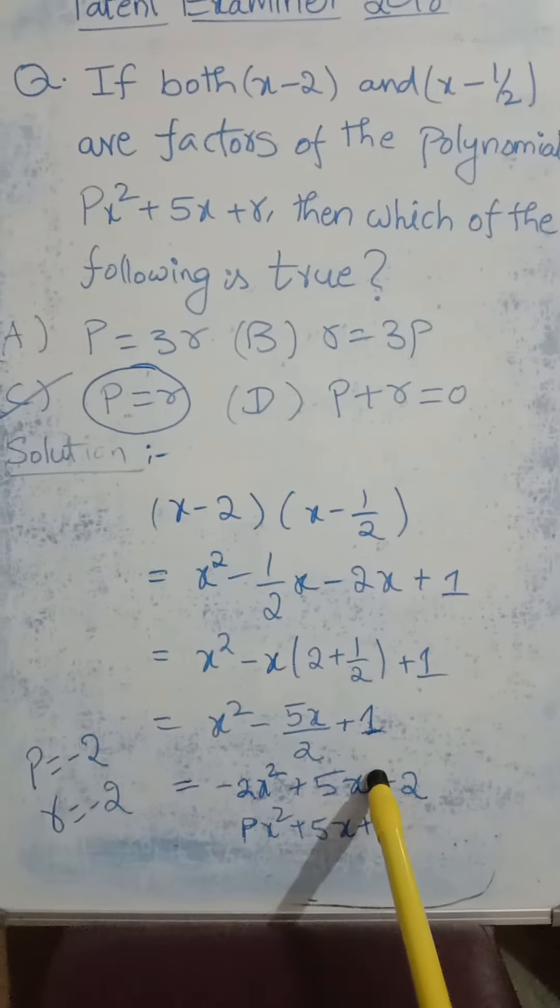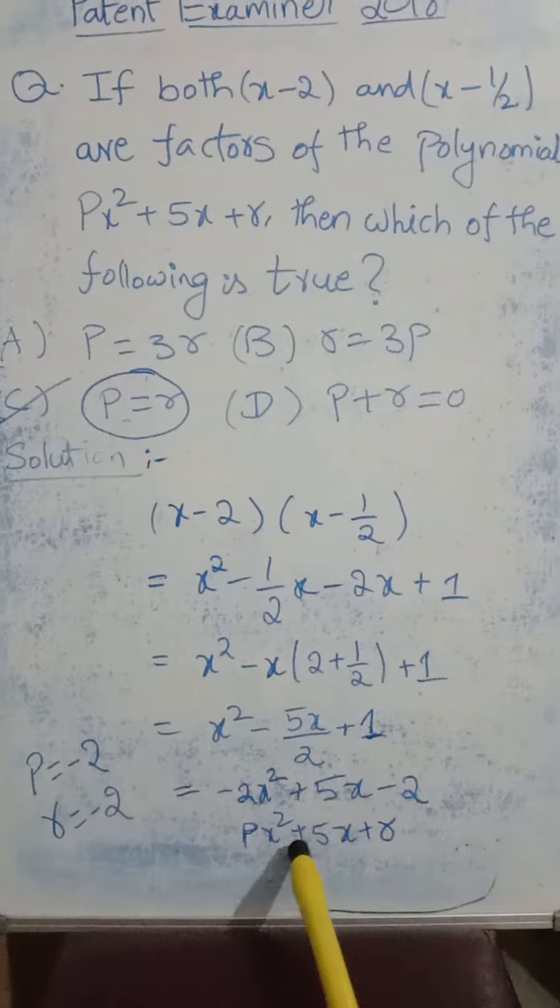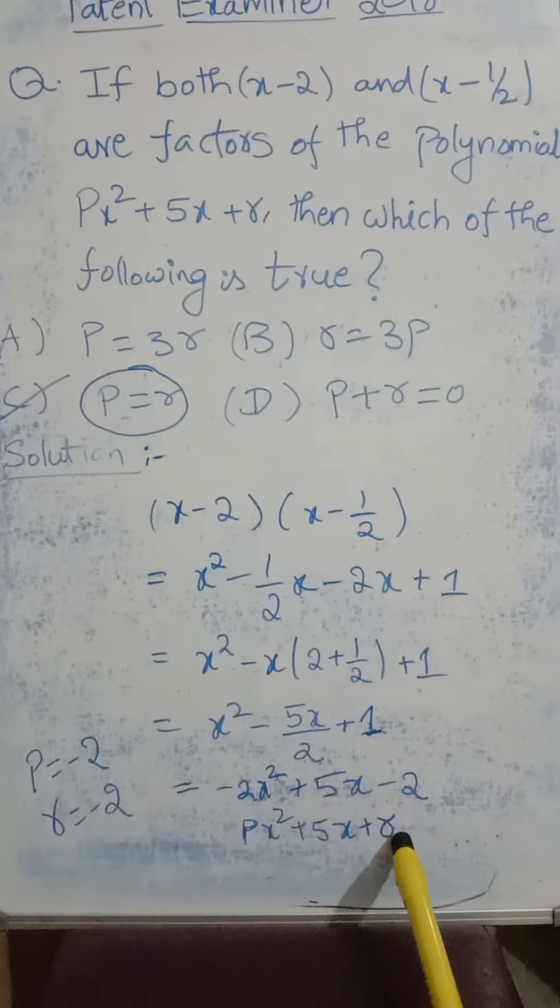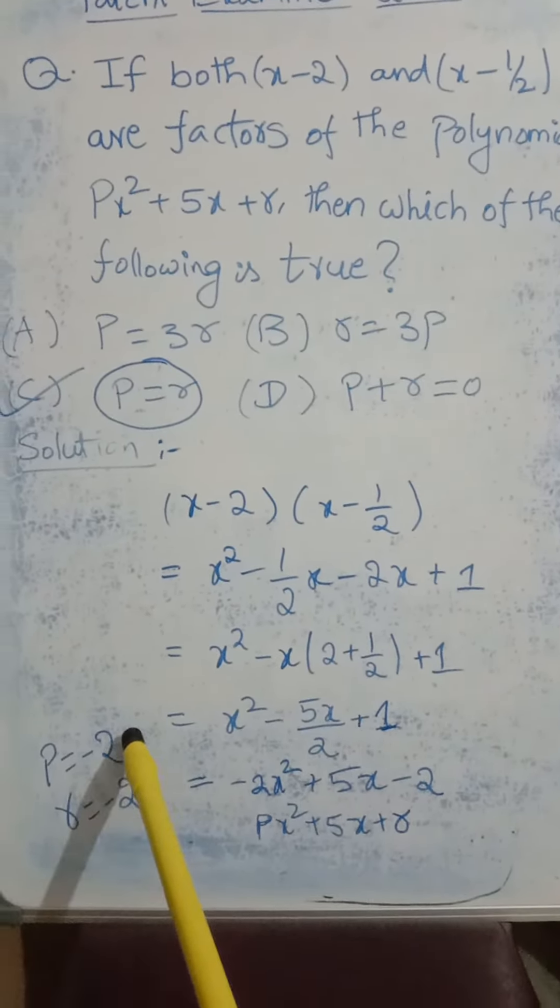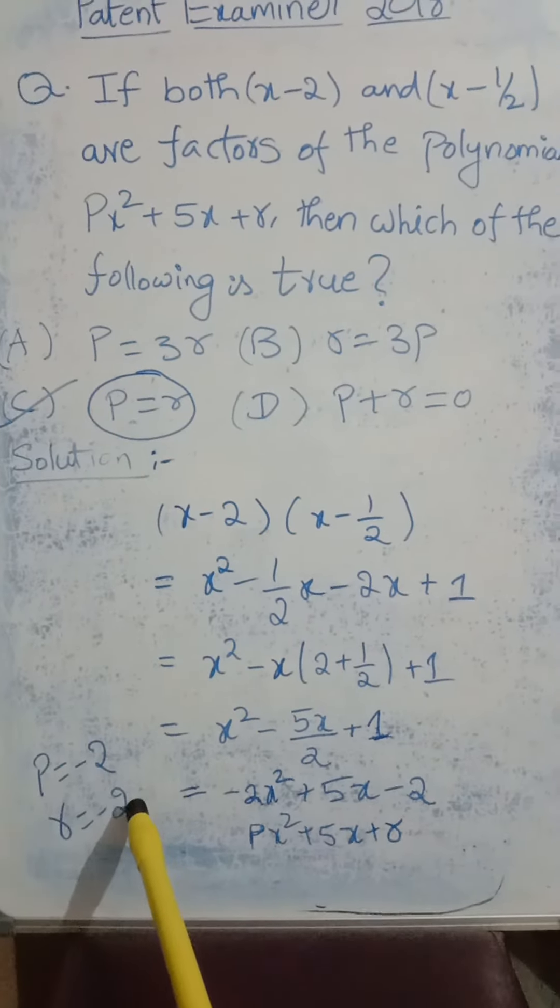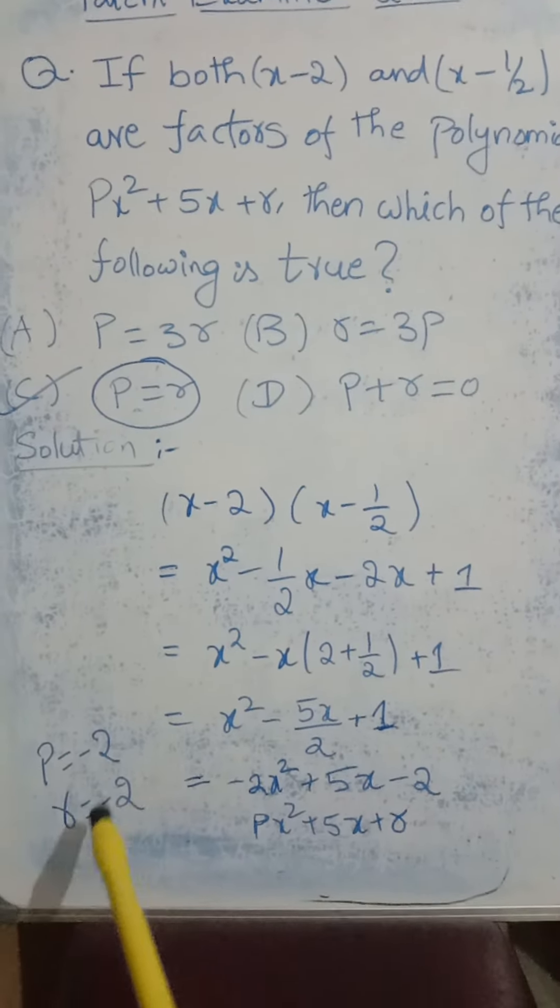If I compare this equation with px square plus 5x plus r, I will get p value as minus 2 and r value also minus 2.